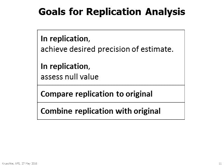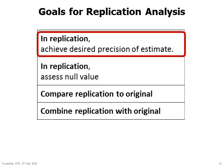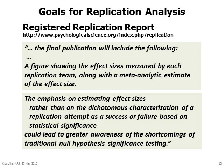I will now provide a cursory overview of merely a few of the various Bayesian methods that address these goals. I'll start with the goal of achieving a precise estimate, because estimation has been emphasized as an essential element of reporting results. In particular, the Association for Psychological Science states that the final publication will include a figure showing effect sizes measured by each replication team along with a meta-analytic estimate. This emphasis on estimating effect sizes, rather than the dichotomous characterization of a replication as success or failure based on statistical significance, could lead to greater awareness of the shortcomings of traditional null hypothesis significance testing.